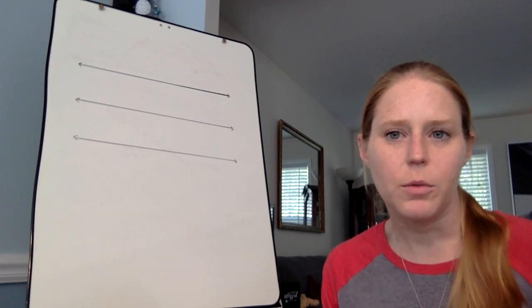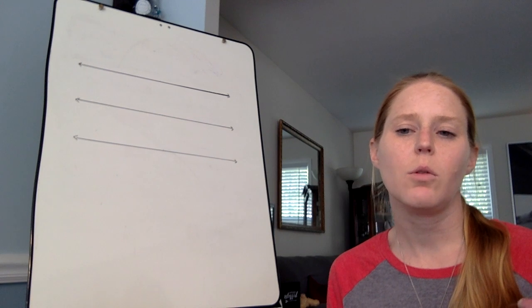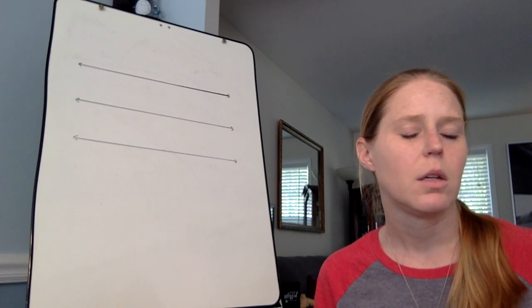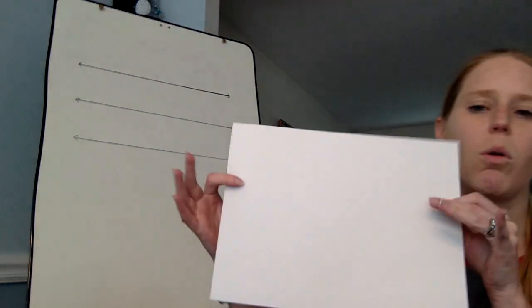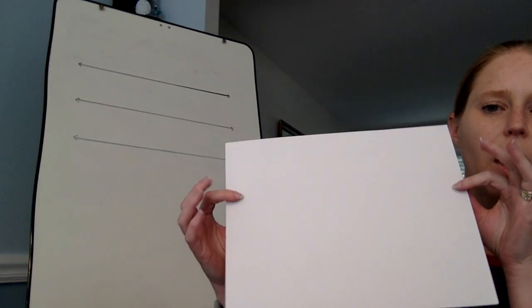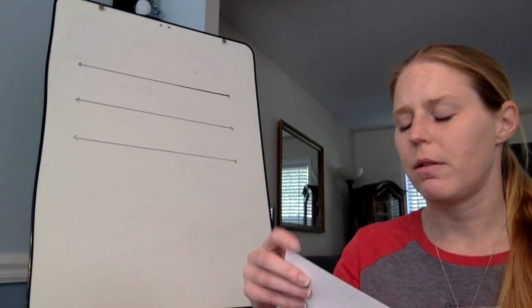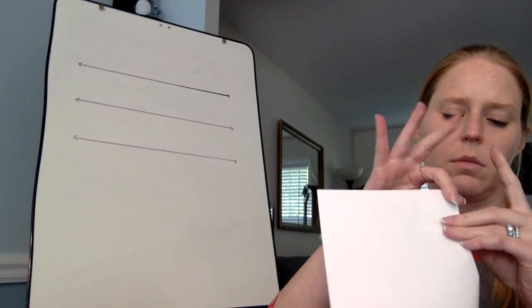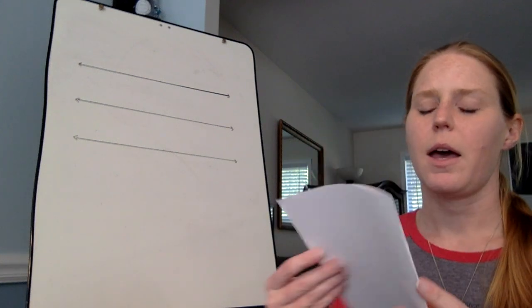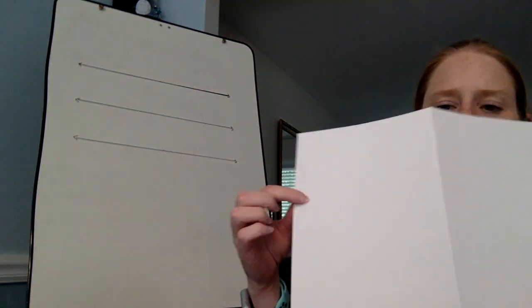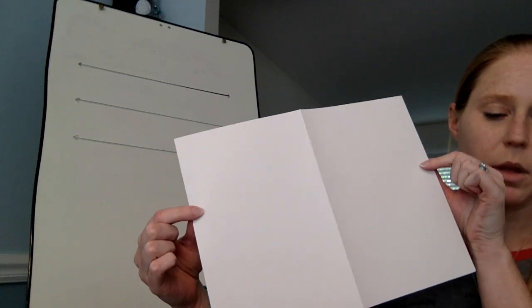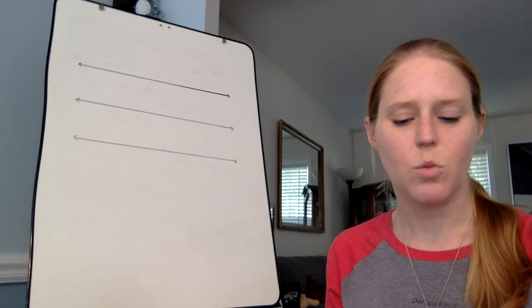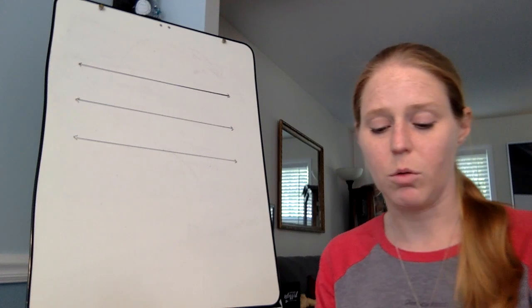So just to review really fast, fractions are the equal size pieces that make up a whole shape or a whole object. So for example, this is my whole sheet of paper. If I fold it in half, I have two equal size pieces that make up the whole shape. So this one piece is one of two pieces that make up this whole piece.